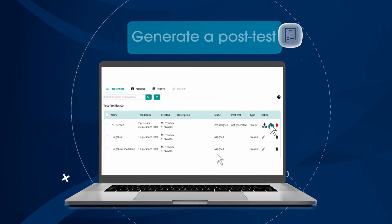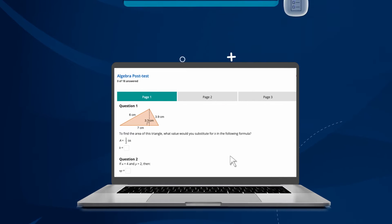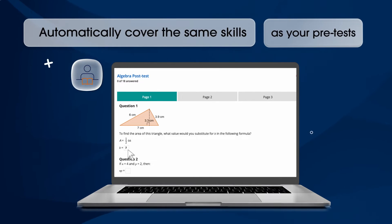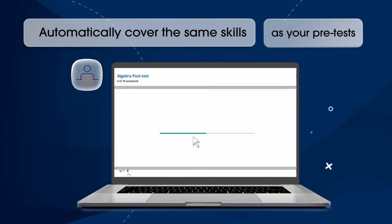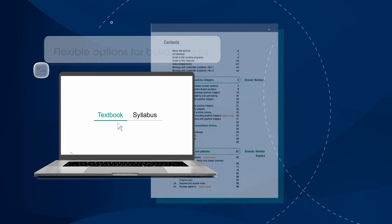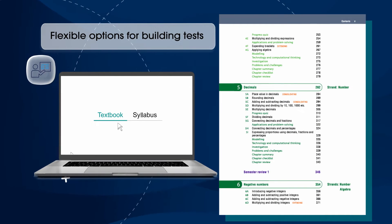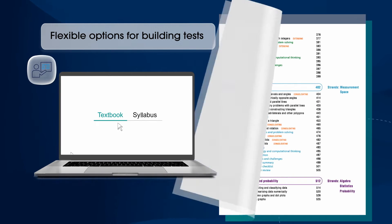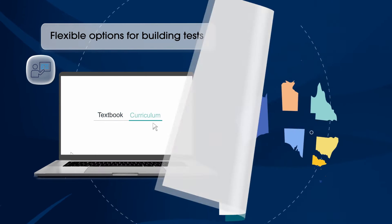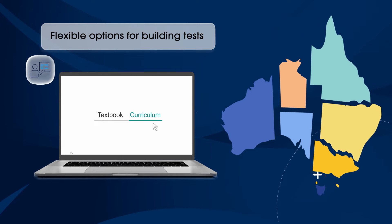Test your students again with a system-generated post test. The post test will match the same skills you've covered in your pre-tests. You have the flexibility to build tests using the latest editions of your state-specific Cambridge textbook view or from the current state or national curricular view.